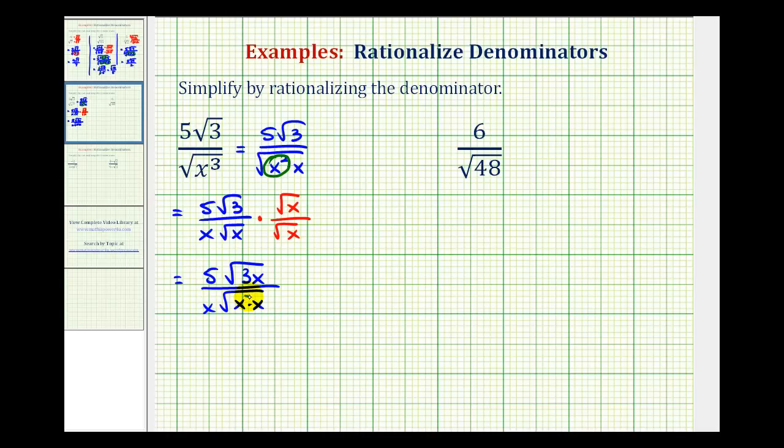And now the denominator is going to be x times the square root of x times x. Again, this is a perfect square factor and therefore simplifies. So finally we have 5 square root 3x divided by, well this simplifies to x, but we already have a factor of x here, so we'd have x squared. Now remember these x's here do not simplify because this x is underneath the square root and these aren't.